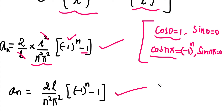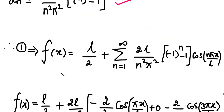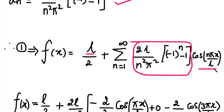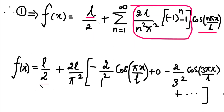Now with a0 equals L and an computed, we substitute into the half range cosine series formula (equation 1). So f(x) equals a0 by 2 plus summation of an times cos(n*pi/L * x). Substituting a0 equals L, the first term is L by 2. Now we expand the summation by taking terms for successive values of n.